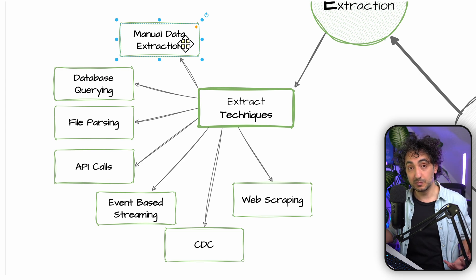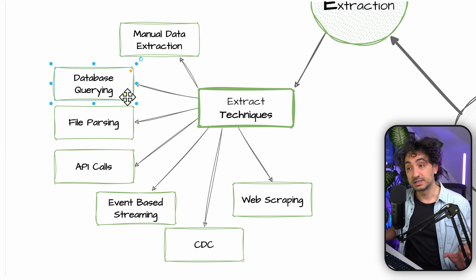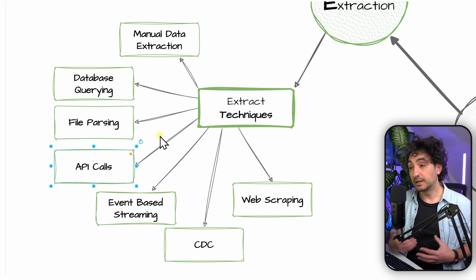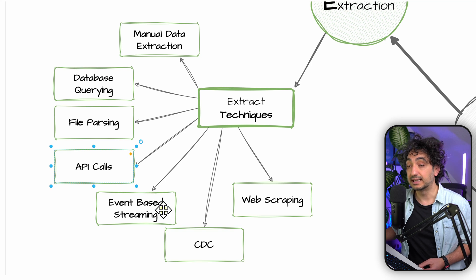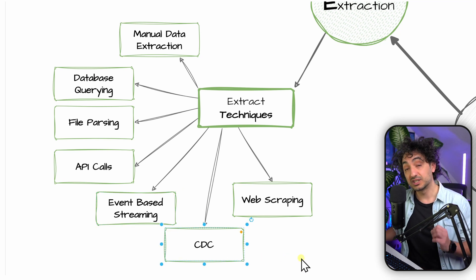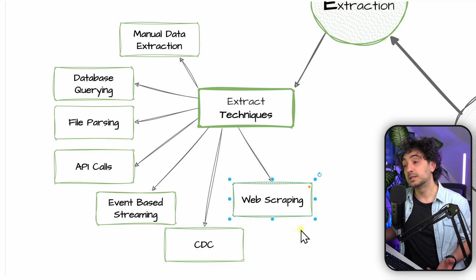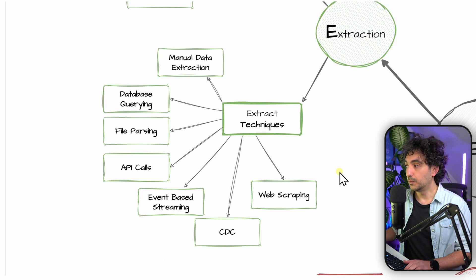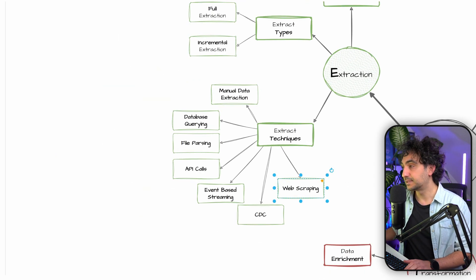For extraction techniques, we have: manual extraction where someone accesses the source system directly; connecting to a database with a query; parsing files to the data warehouse; connecting to an API and making calls; event-based streaming such as Kafka; Change Data Capture (CDC), which is similar to streaming; and web scraping, where code runs and extracts information from the web.